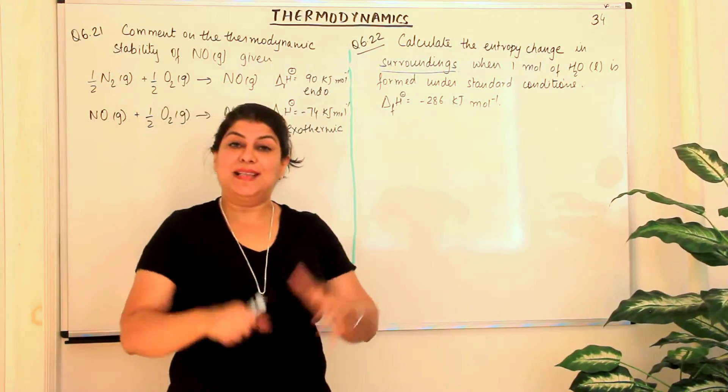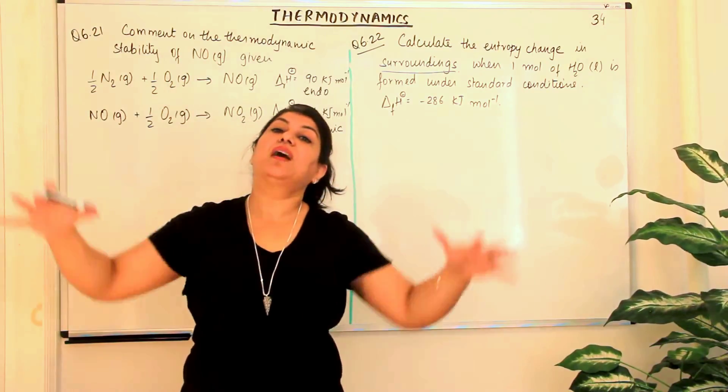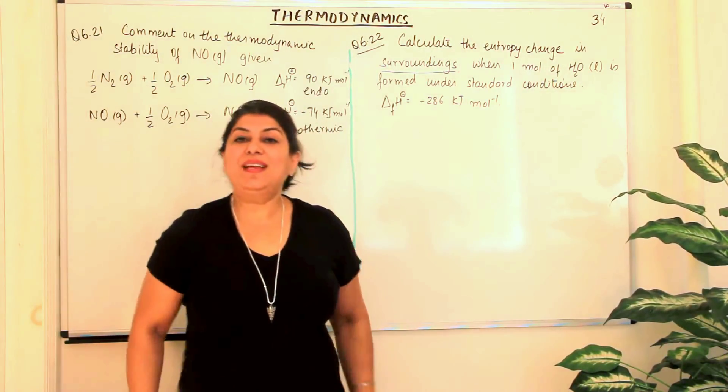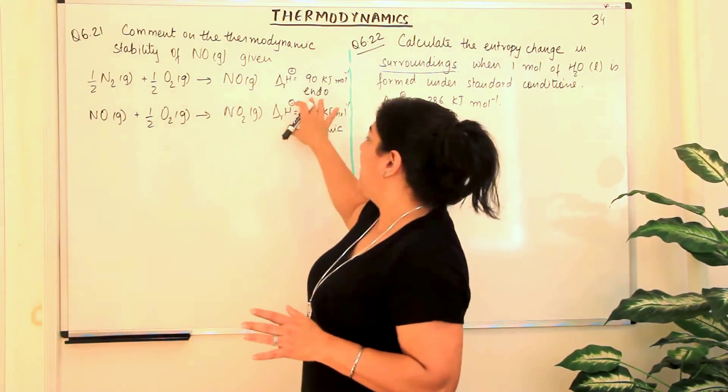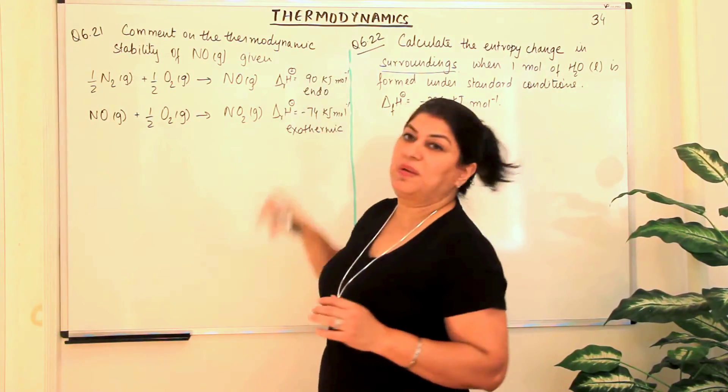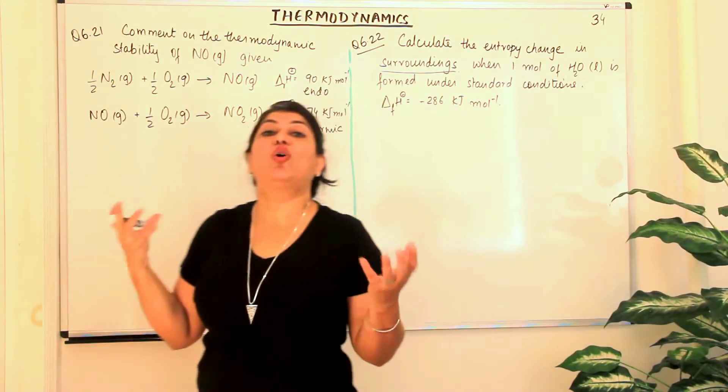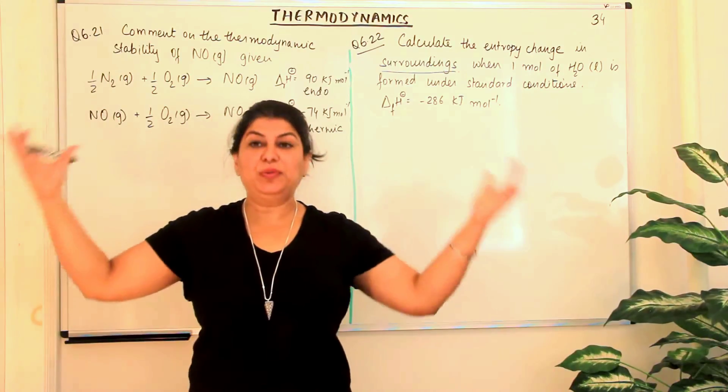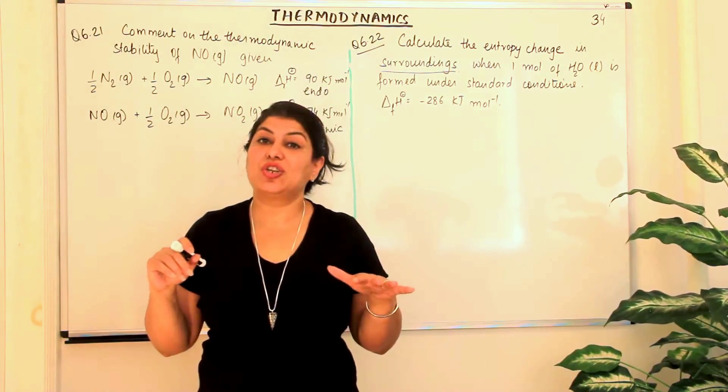You know, whatever reaction is taking place, that is the system. And whatever is around it is the surrounding. So when we say a reaction is endothermic, it absorbed this much energy. Where did it absorb that energy from? It absorbed the energy from the surroundings.